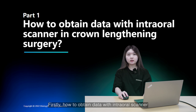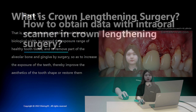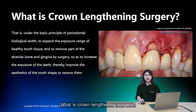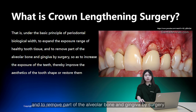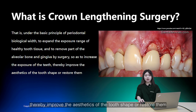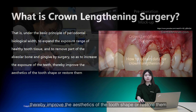Firstly, how to obtain data with an intraoral scanner in crown lengthening surgery. What is crown lengthening surgery? Under the basic principle of periodontal biological width, it involves removing part of the alveolar bone and gingiva by surgery, so as to increase the exposure of the teeth, thereby improving the aesthetics of the tooth shape or restoring them.